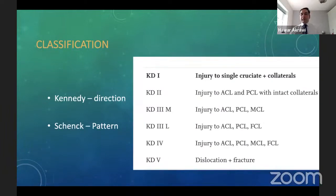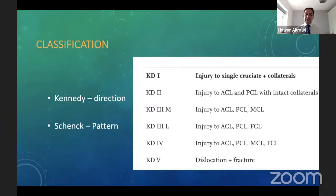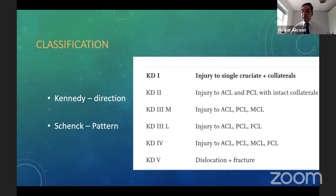Regarding classification: in 1963, Kennedy proposed a directional classification relating the tibia to the femur — anterior, posterior, medial, and lateral — but this poorly informs about the structures injured. The Schenck classification, introduced in 1994, is by and large what we use nowadays. These are really complex injuries with a spectrum of heterogeneity, but this classification system guides treatment. You can have cruciate ligament injury with or without collateral involvement, medially or laterally based; more severe injuries trend toward knee dislocation, and associated fractures make them much harder to treat.